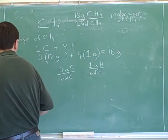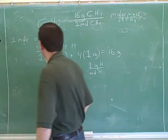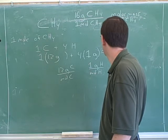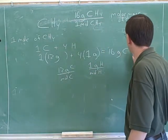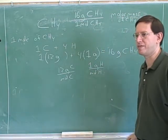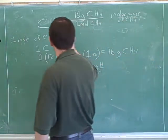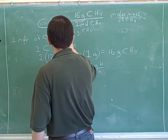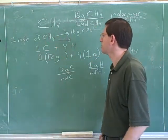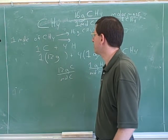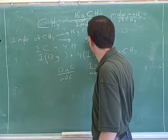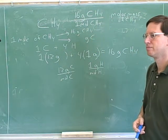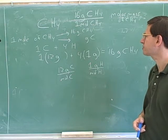If you had one mole of methane, how many grams of methane would that be? 16 grams of methane. Now, how many grams of carbon are there in one mole of methane? This is something we can work out without too much scratch work.